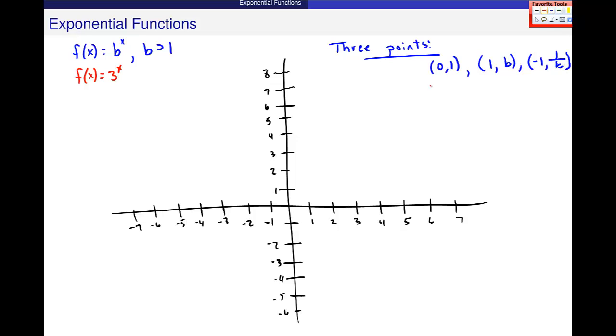In this case, these points are the point 0, 1, 1, 3. That should show up on your chart. And negative 1, 1 over 3. So I'm going to go ahead and put those on the graph.